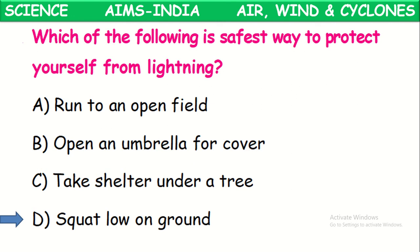Which is the safest way to protect yourself from lightning? Running to an open field is not safe. Opening an umbrella is not safe because the metallic rod may attract electrical power from thunder. Taking shelter under tall trees is also not safe because wet trees attract thunder. The safest thing to do is to crouch low on the ground.